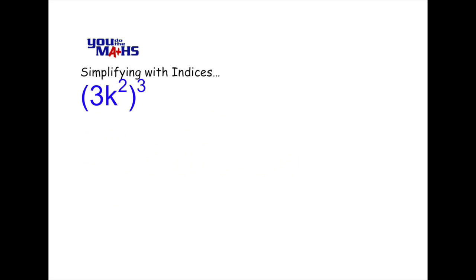Here's another problem where we've got 3k squared all inside the bracket and everything inside the bracket is being raised to the power 3. That means that 3k squared is multiplied out by itself three times.